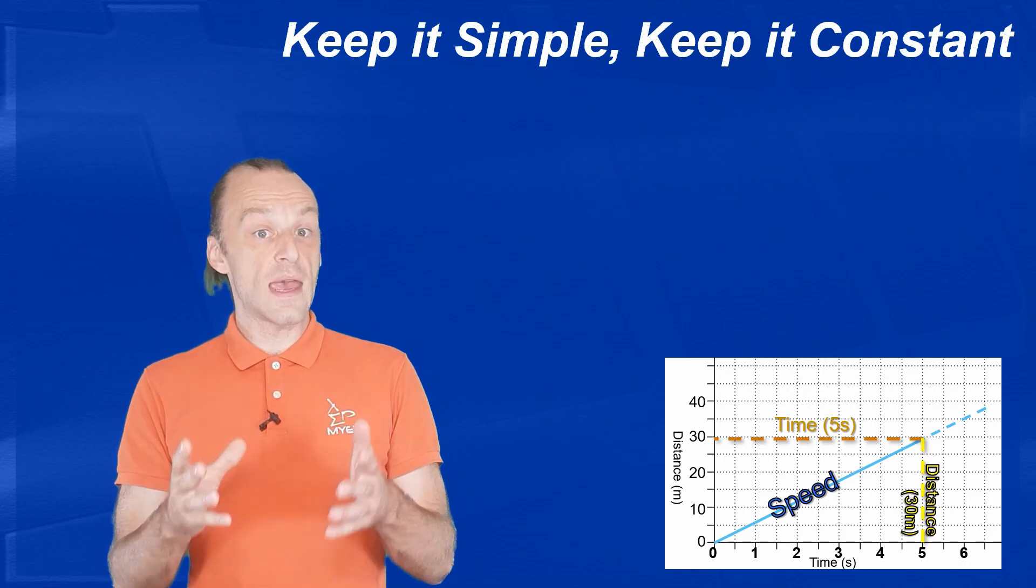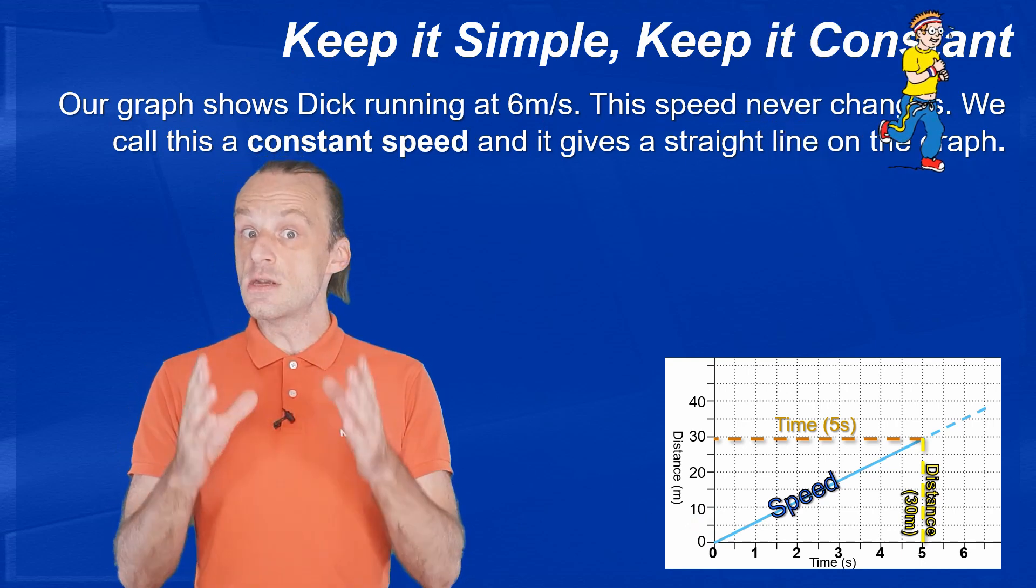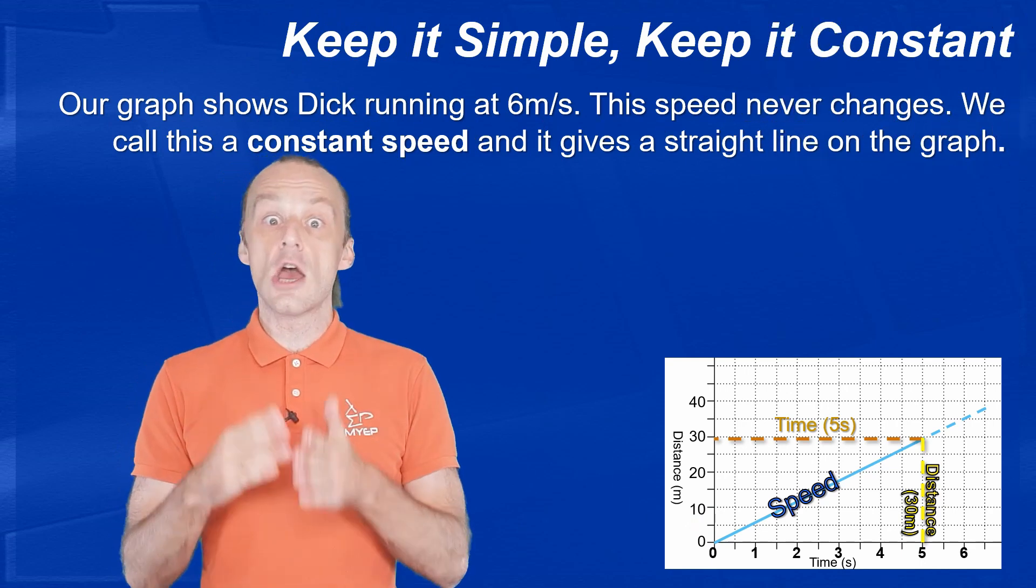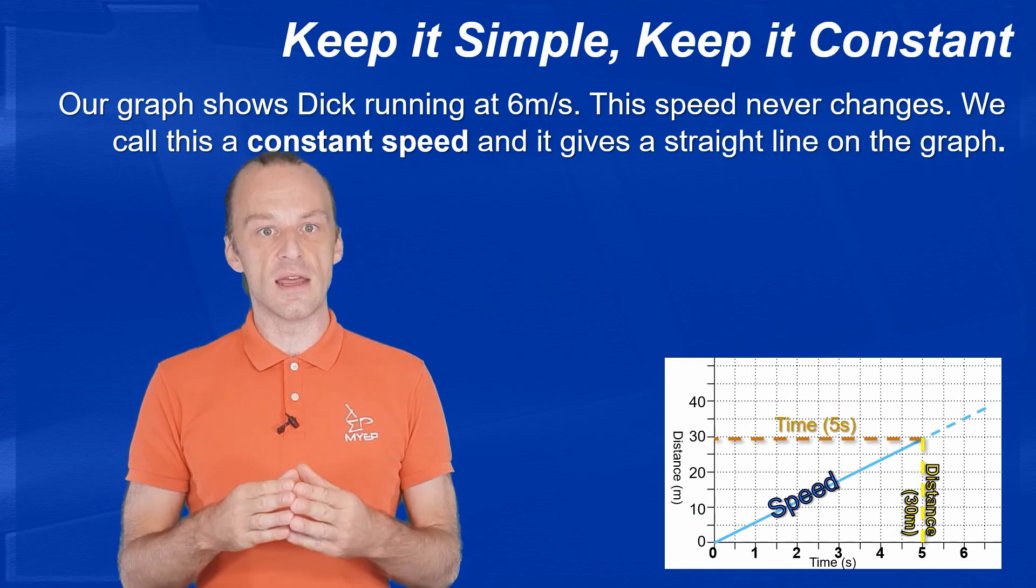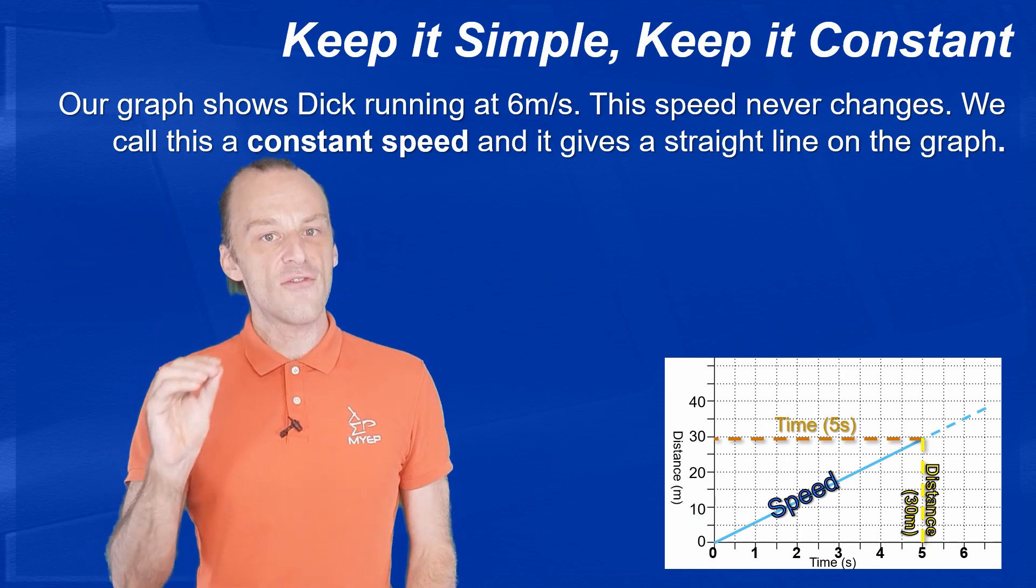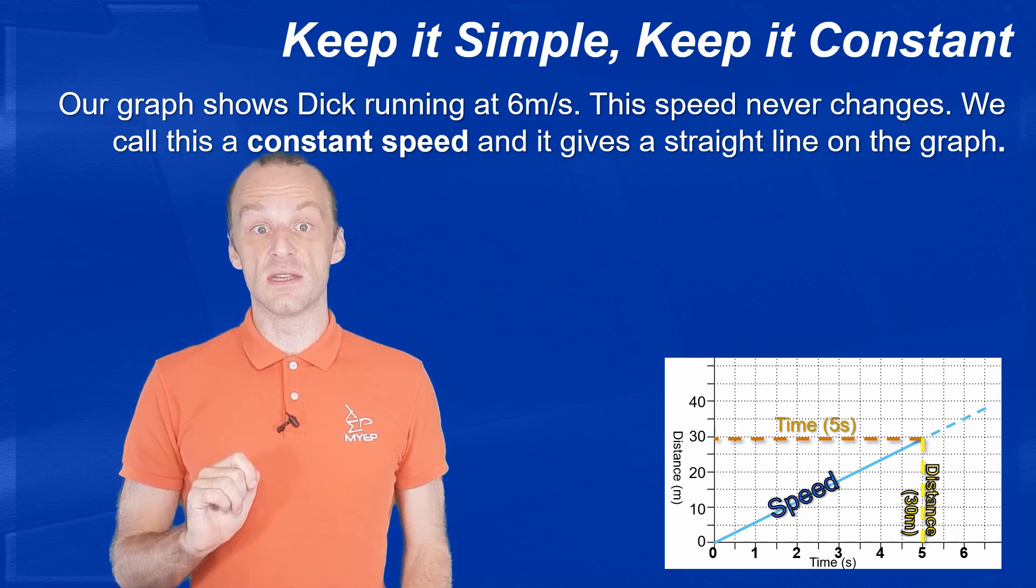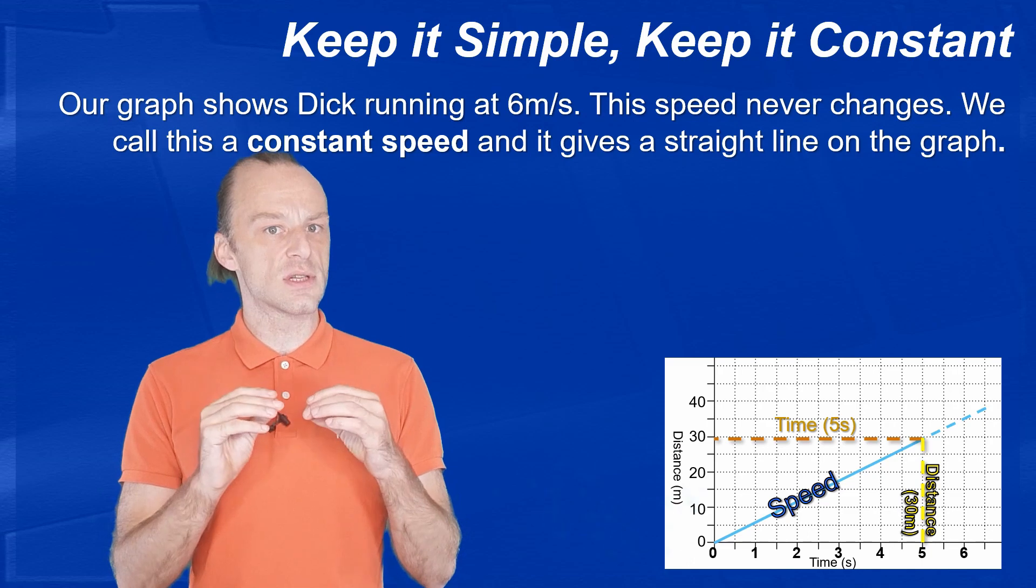So the graph we've made shows us Dick's speed of 6 meters per second. And we know his speed doesn't change because it is a straight line. And a straight line has the same gradient all the way along. Every one second, the graph goes up another 6 meters. We call this a constant speed.